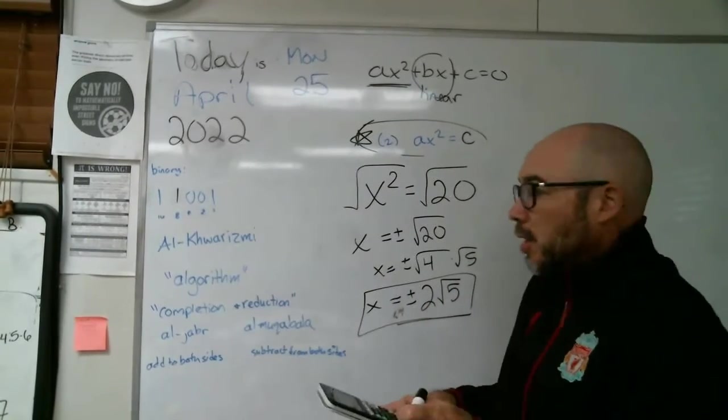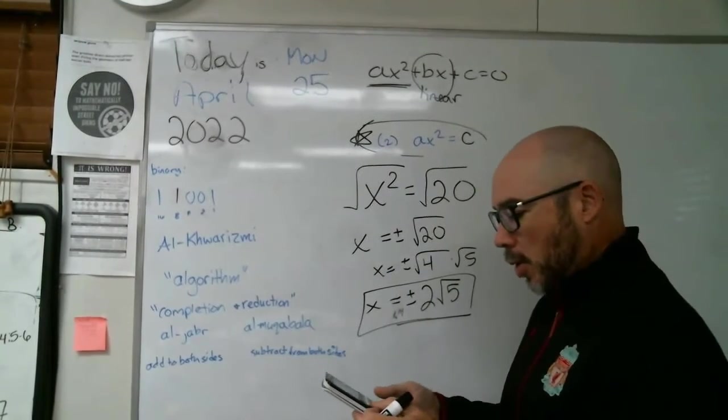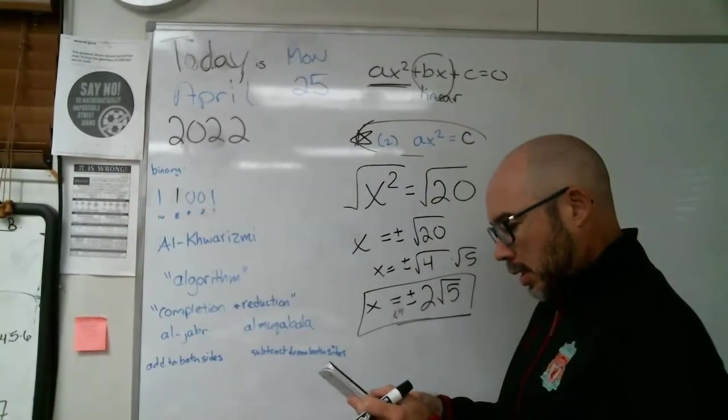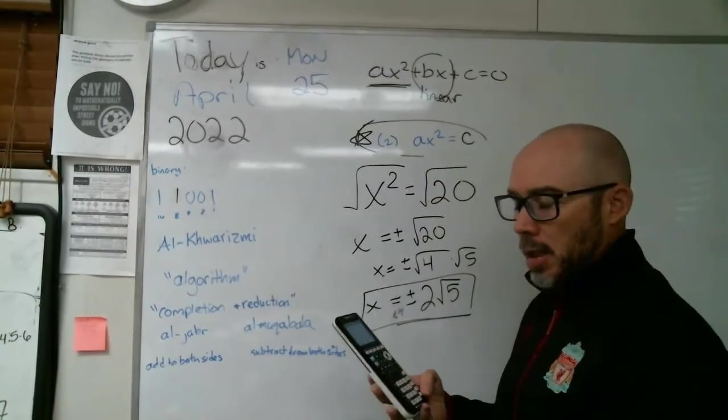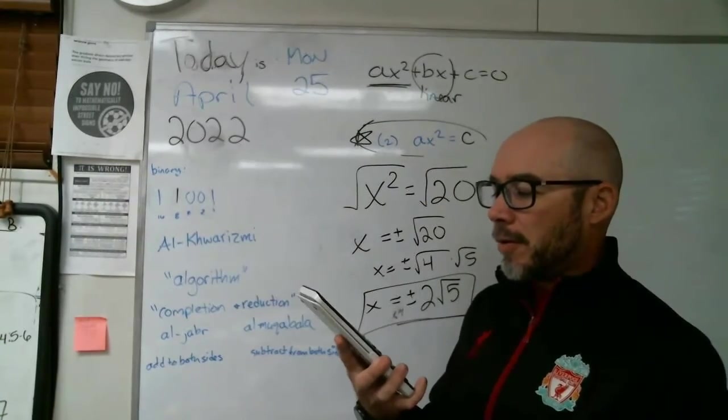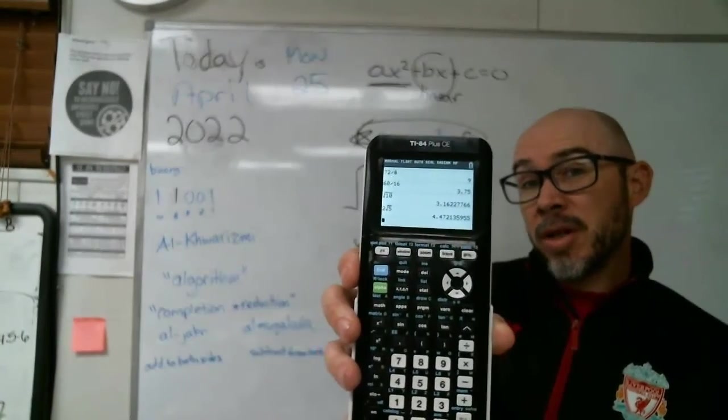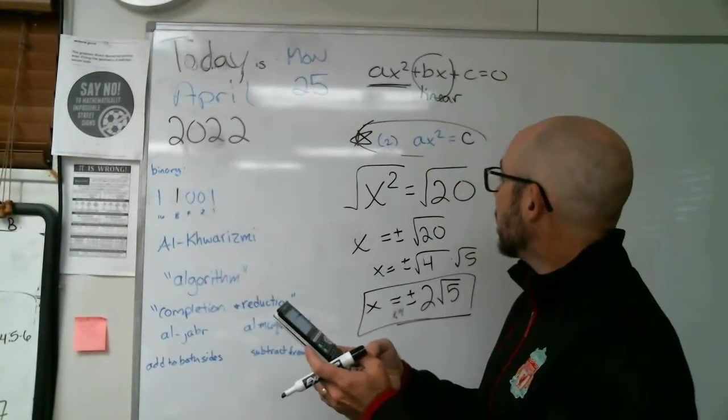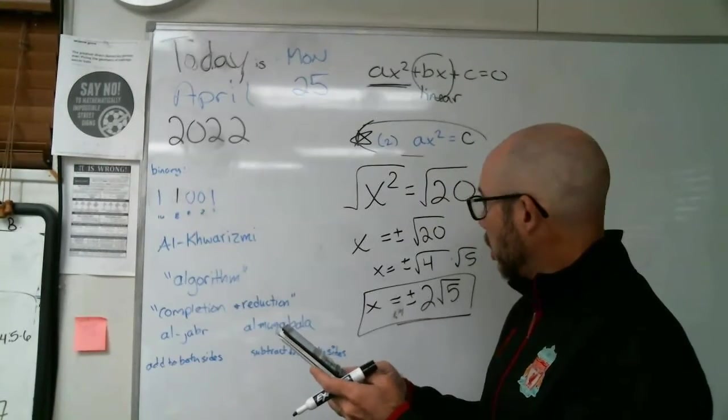And then if you did graph it and you're looking at where the intercepts were, you can always just double check and verify that two square root of five, 4.47 will be just like if we did the problem x squared